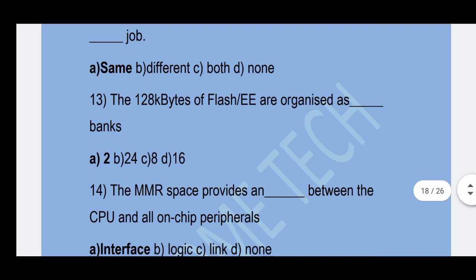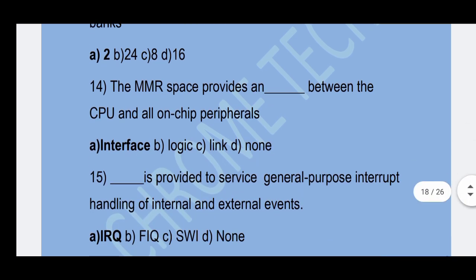Next question: The 128k bytes of flash memory are organized as how many banks? Option A — 2 is the correct answer.